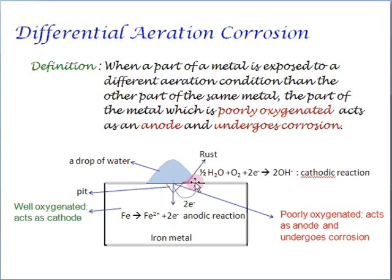These electrons move through the metal as we all know that metal is a good conductor of electricity. When it comes in contact with the water and oxygen, it gets reduced to form hydroxide ions. This forms the cathodic reaction. So, the poorly oxygenated area acts as anode and undergoes corrosion and the complete part of the other metal acts as the cathode.